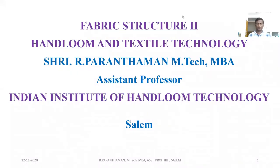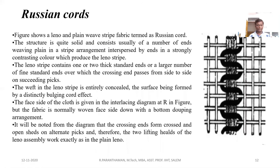Fabric Structure 2: Handloom and Textile Technology. The Fabric Production. Here we are seeing a type of fabric called Russian Cards. In Russian Cards, Leno and Plain weave are forming stripes in the fabric surface. That is called the Russian Cards effect.